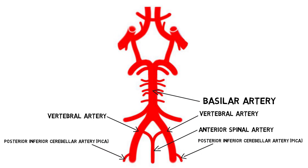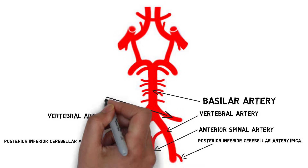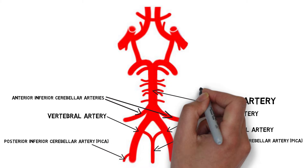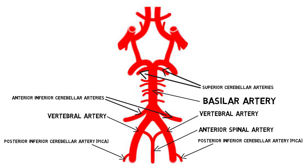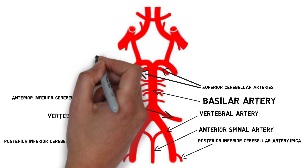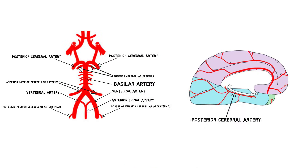The basilar artery gives rise to the anterior inferior and superior cerebellar arteries, which supply the rest of the cerebellar surface. Then at the level of the midbrain, the basilar artery splits into two posterior cerebral arteries, which supply the medial and inferior surfaces of the occipital and temporal lobes.